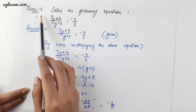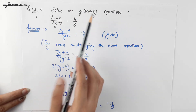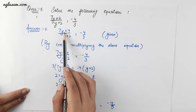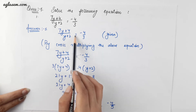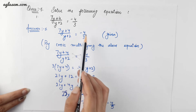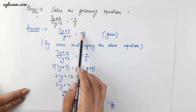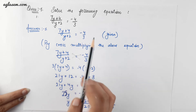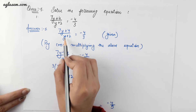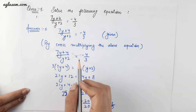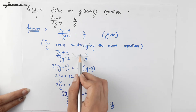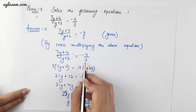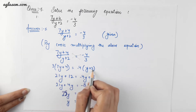Coming to question number 5: solve the following equation to get the value of y. The equation is (7y plus 4) upon (y plus 2) is equal to minus 4 by 3. Here the minus sign is only for the 4 and not for the whole fraction. For finding the value of y we will apply the cross multiplication method: 3 into (7y plus 4) and minus 4 into (y plus 2).